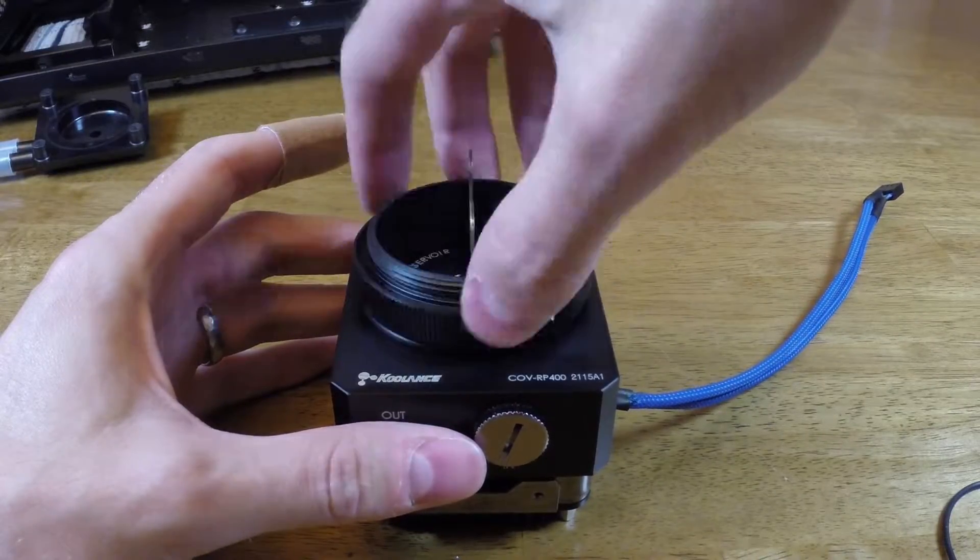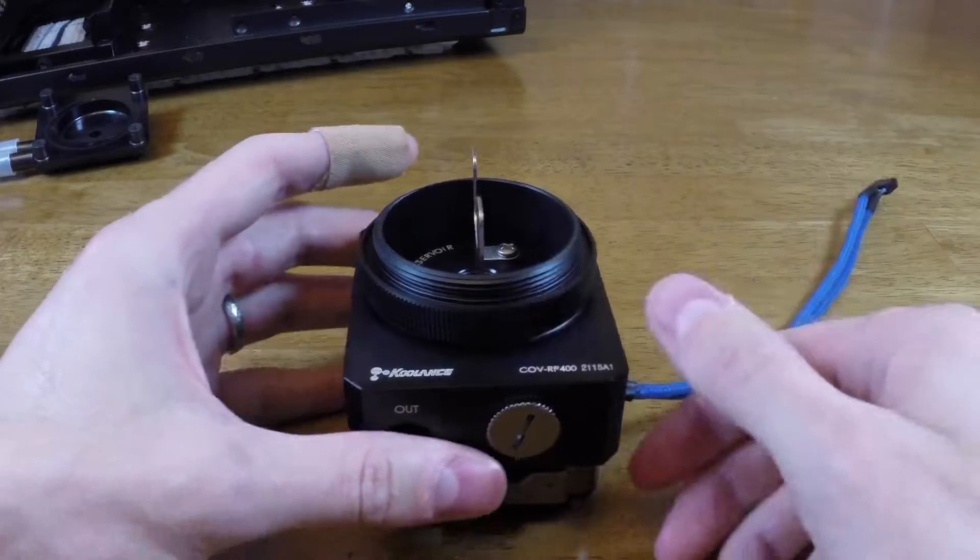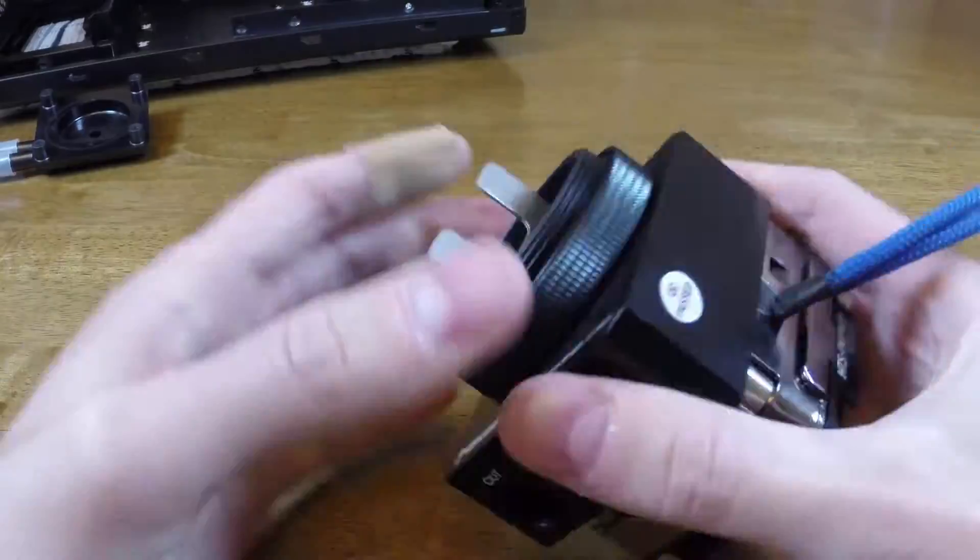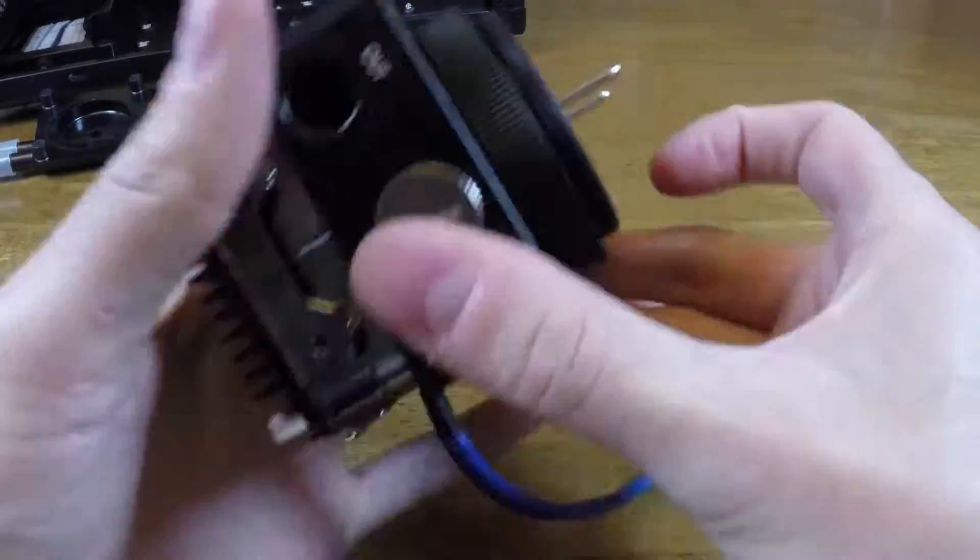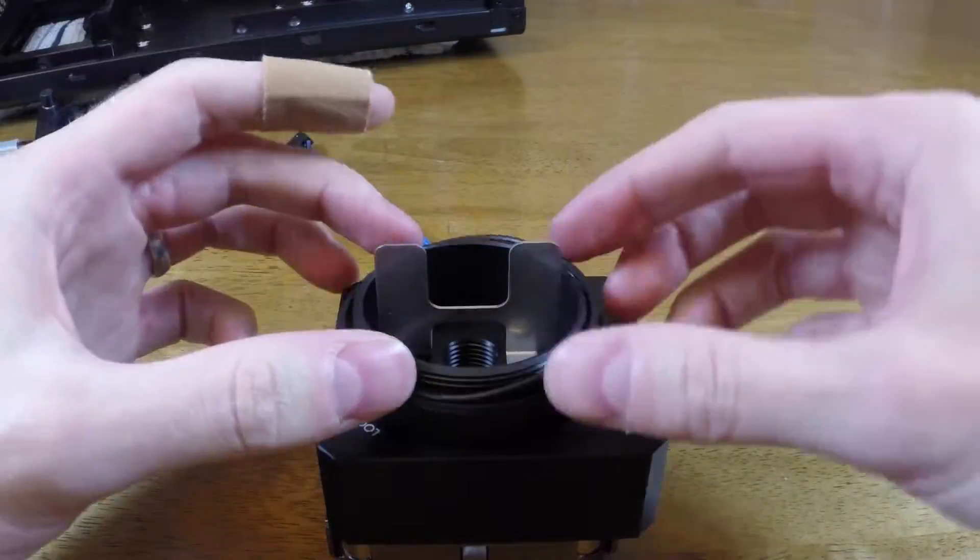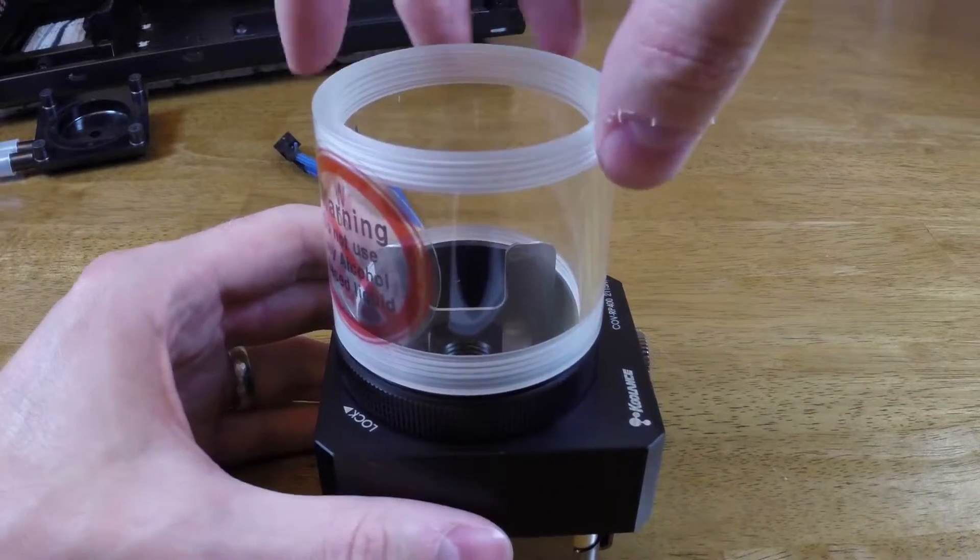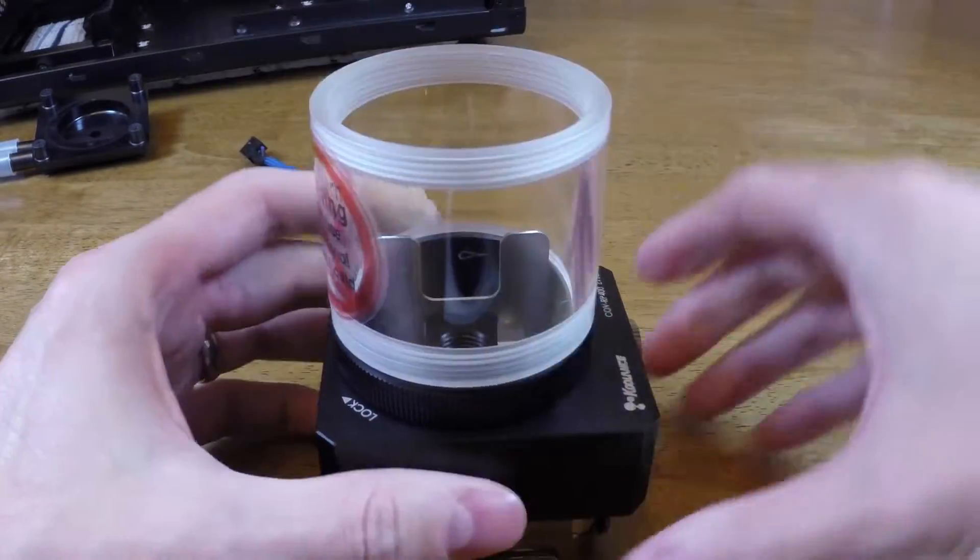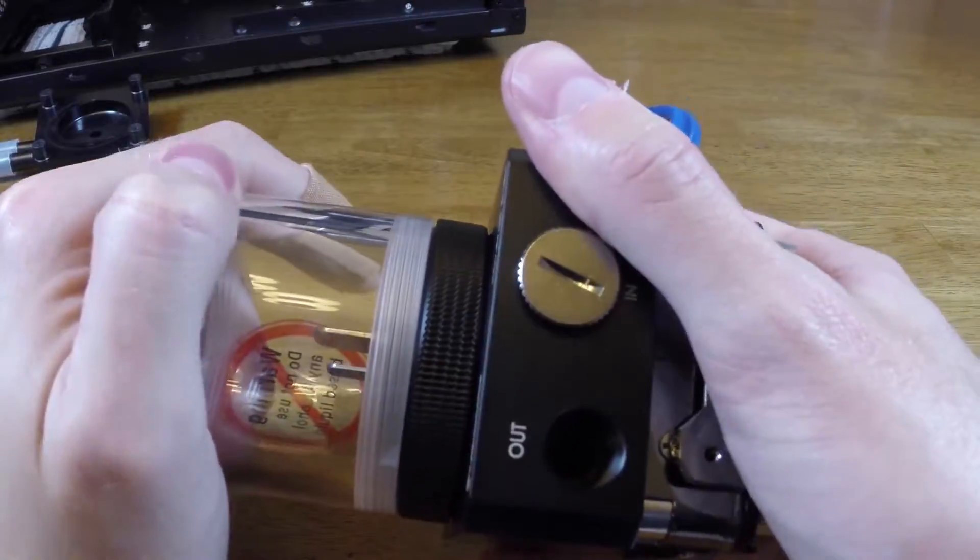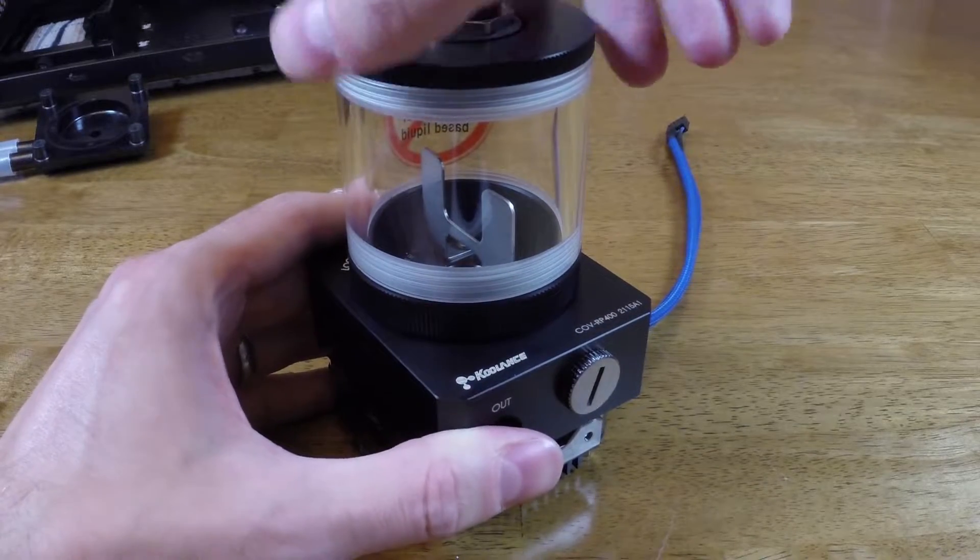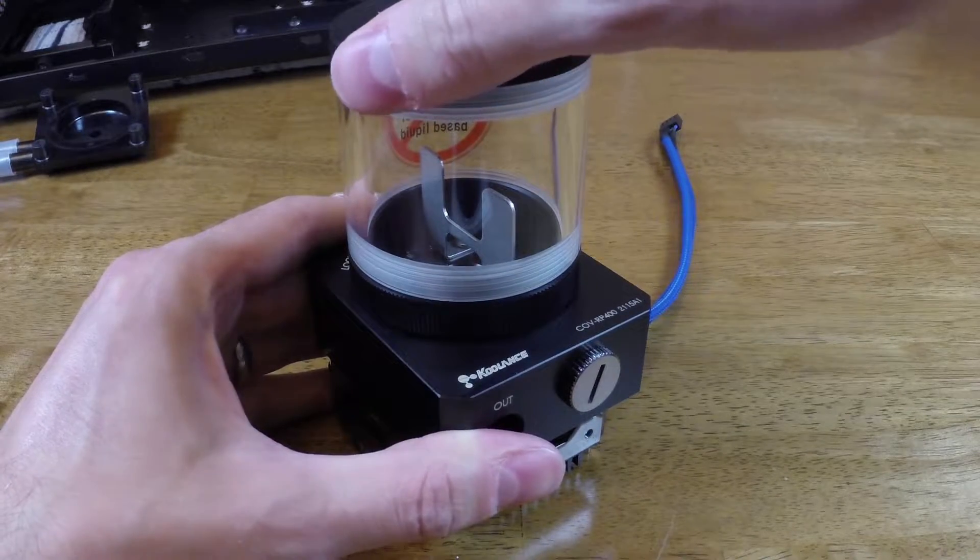Install the coupling on top of the pump top. This will connect the reservoir to the pump top. Next make sure your o-rings are seated correctly and screw on the reservoir. Then, screw on the cap to the reservoir if your system has one.